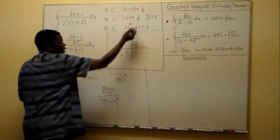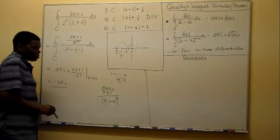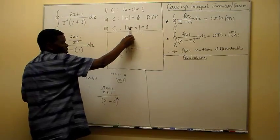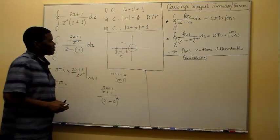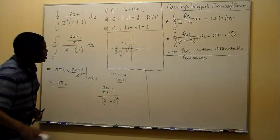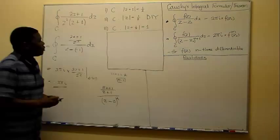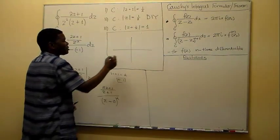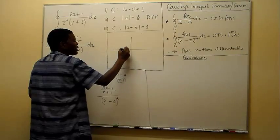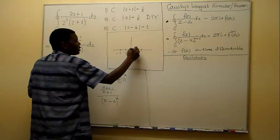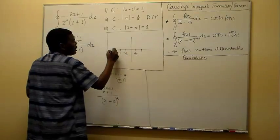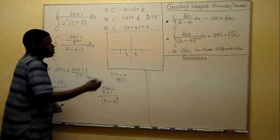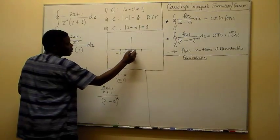With this circle having radius one-eighth, I'm now going to proceed to discuss the third case. Let's look at this picture: we have a circle centered at minus one-half. We've got 1, one-half, minus one-half, minus 1 marked on the axis.